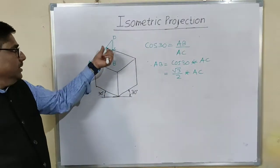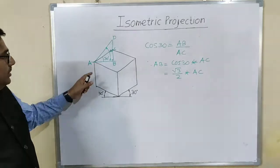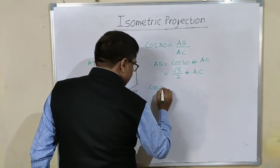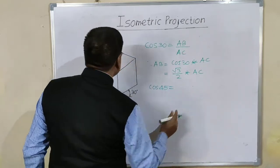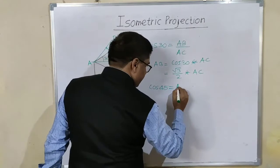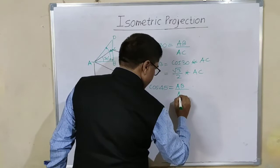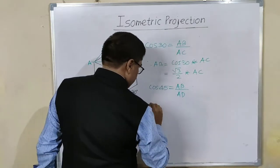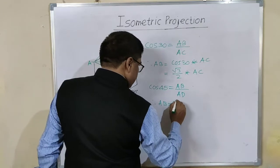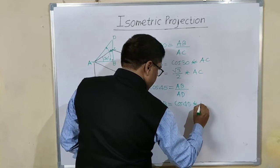Now for this ABD right angled triangle, that is bigger right angled triangle, if you once again take cos ratio, cos 45 is equal to adjacent side AB upon diagonal AD. Therefore, AB is equal to cos 45 into AD, which is 1 by root 2 into AD.